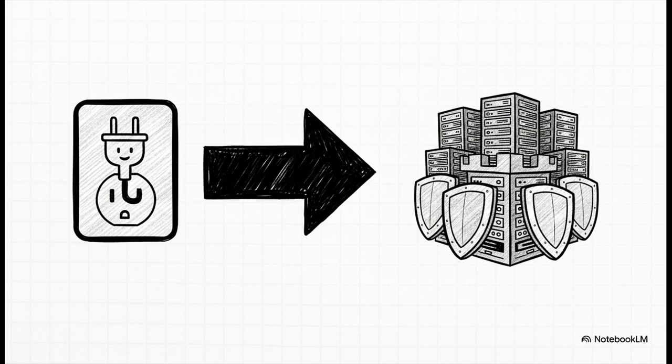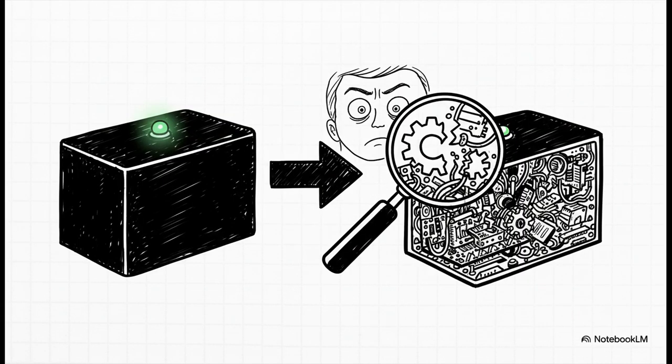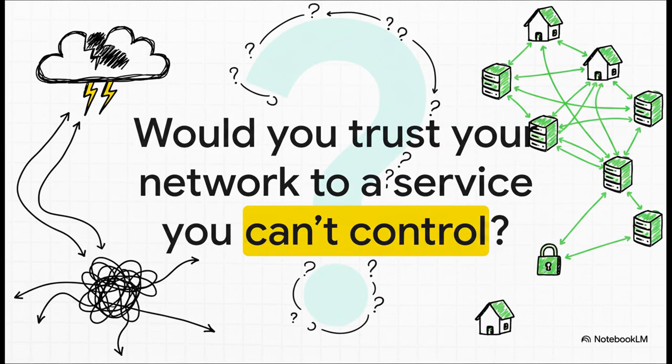You know, the best tools are the ones you forget are even there. They just work, quietly, in the background. This outage did the complete opposite. It made an invisible tool painfully visible. And by doing that, it forced thousands of people to pop the hood, to really understand how it works, and to start asking some tough questions about their own digital setups. And that really brings us to the big question this whole thing leaves us with. In a world that's built on the cloud, how much control are we actually willing to give up for convenience? This outage proved that for a whole lot of people, that answer has changed. It's not just about what works anymore. It's about what happens when it breaks.